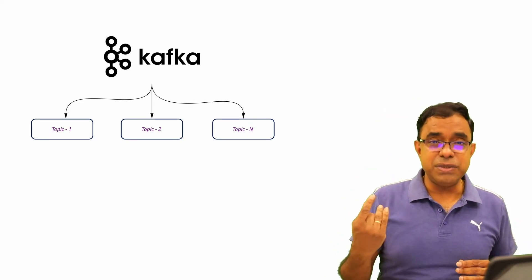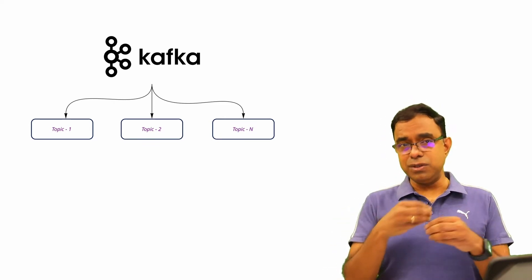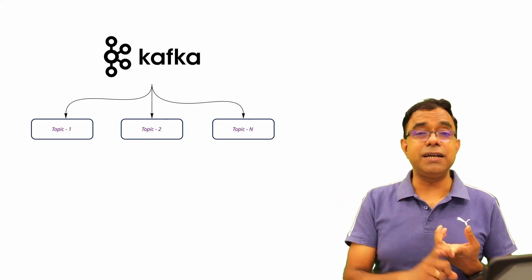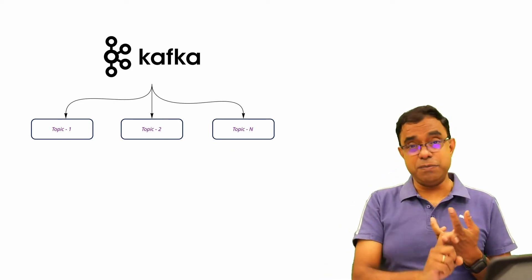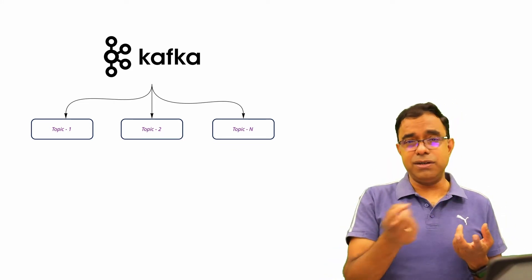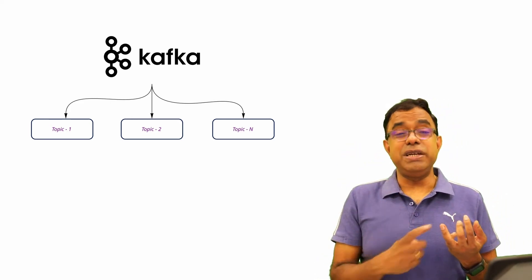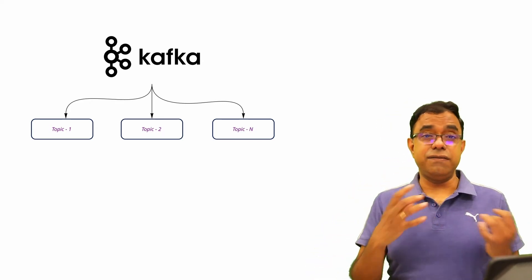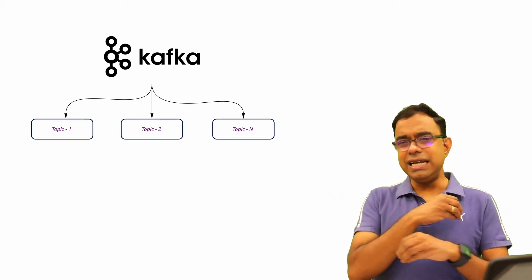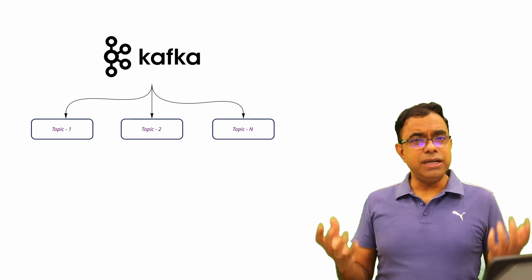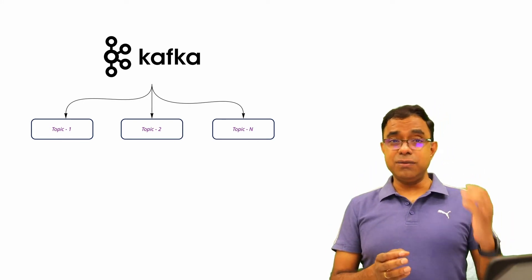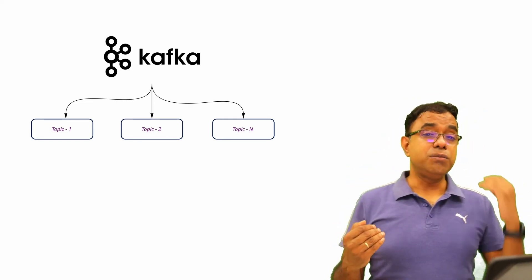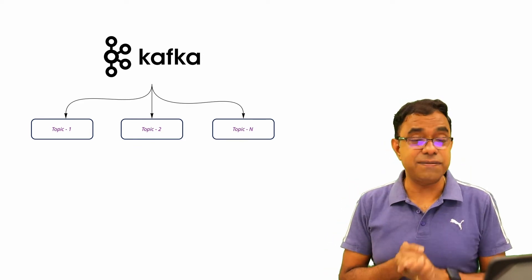Let's assume you are creating an app where you are tracking user activity. User visiting which website — you can have one topic for that. How much time a user spends on a website or in a YouTube video — you can have a topic for that. How many times a user acts on your recommendation — you can have a topic for that. How many times a user acts on a friend's recommendation — you can have a topic for that. It's totally up to you how many topics you create. Both producers and consumers interact with Apache Kafka topics.